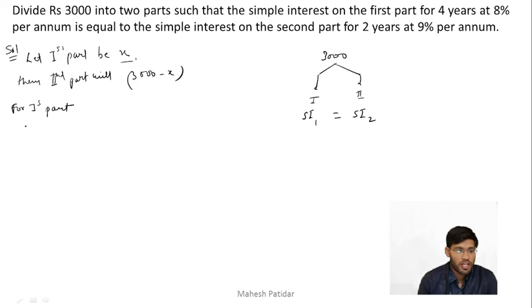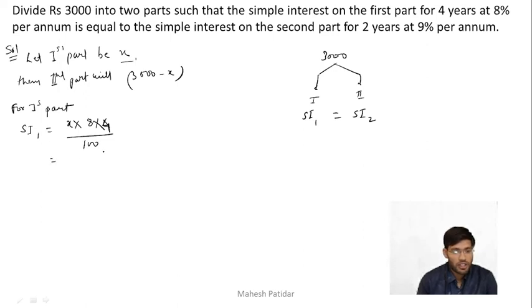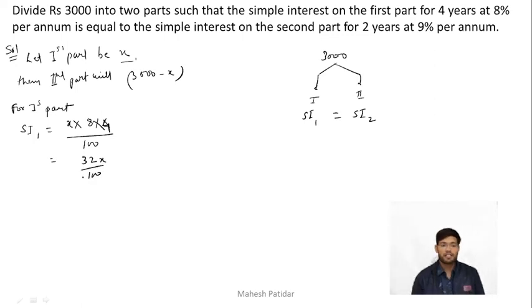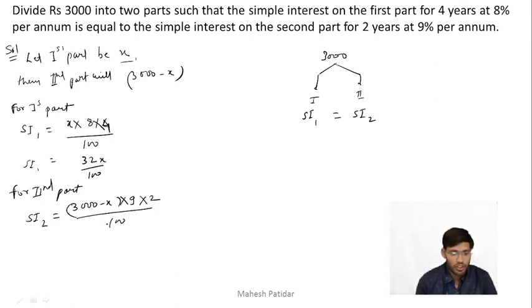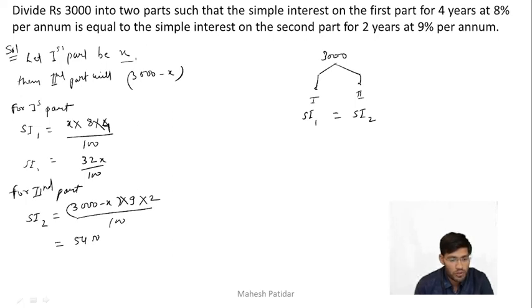SI for first part: SI1 = X × 8 × 4 / 100 = 32X/100. SI for second part: SI2 = (3000 − X) × 9 × 2 / 100 = 18(3000 − X)/100 = (54000 − 18X)/100.